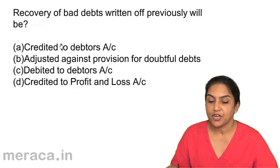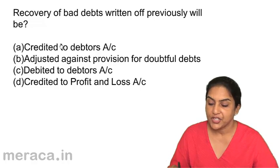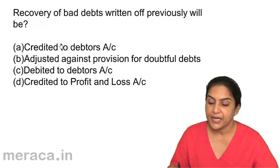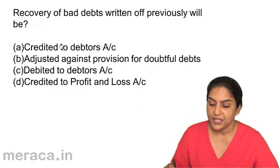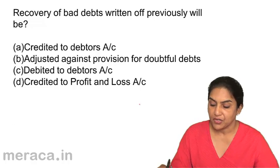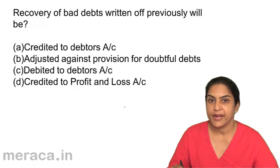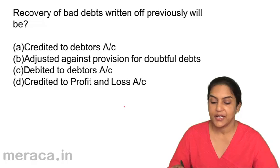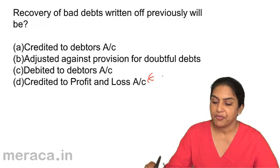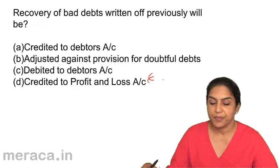Question 7: Recovery of bad debts written off previously will be — A: credited to debtor's account, B: adjusted against provision for doubtful debts, C: debited to debtor's account, or D: credited to profit and loss account. Bad debts recovered is an income — it goes to the profit and loss account, so it will be credited to the profit and loss account.